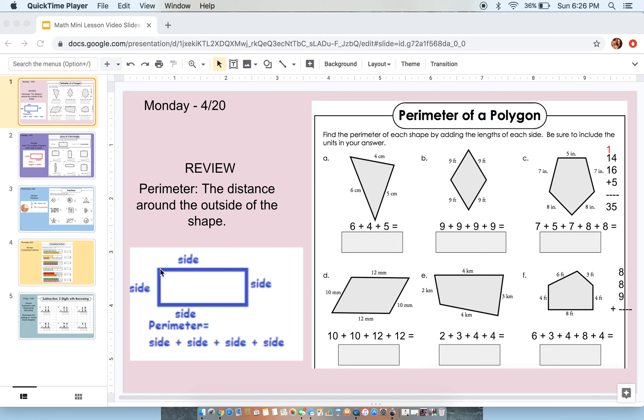So let's look at our example here. It is the distance all around the outside of our shape. Right here we have a rectangle and you can see that we need to add the sides. That is going to give us our perimeter. So let's read the directions. It says find the perimeter of each shape by adding the lengths of each side. Be sure to include the units in your answer.